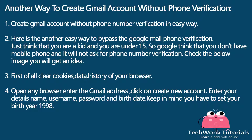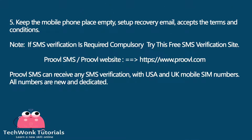Another way to bypass Google mail phone verification: just set your age as if you are under 15. Google assumes you don't have a mobile phone and will not ask for phone number verification. First clear cookies, data, and history from your browser. Open any browser, enter the Gmail address, and click 'create new account'. Enter your name, username, password, and birthdate — keep in mind you have to set your birth year to 1998. Keep the mobile phone field empty, set up a recovery email, and accept the terms and conditions. Note: if SMS verification is still required, try the free SMS verification site ProvelSMS at https://www.proval.com — it can receive any SMS verification with USA and UK mobile SIM numbers, and all numbers are new and dedicated.